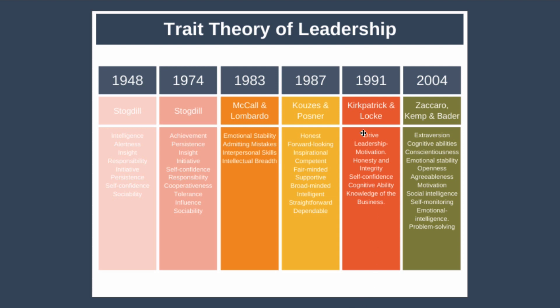Next we have the study in 1991 performed by Kirkpatrick and Locke. They suggested that there were certain traits in leaders which equipped them with the tools to then go on and develop into great leaders should they so choose. The key thing to note is that Kirkpatrick and Locke are not saying that by possessing all these traits you will automatically become a great leader, but rather that by having those traits you simply have the basic tools you need should you wish to work to become a great leader.